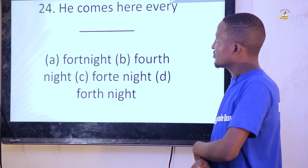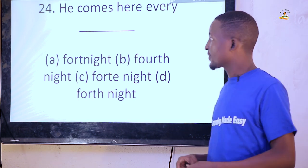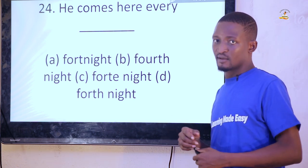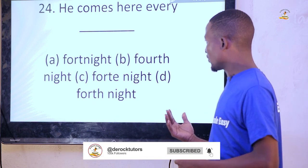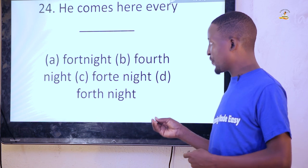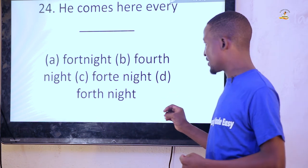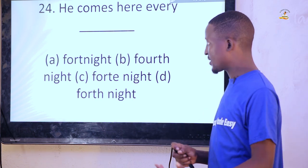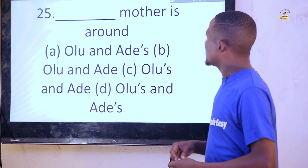This is also a question on correct spelling. 'He comes here every dash — fortnight,' that is every two weeks. The best way to have it written is 'fortnight,' option A: F-O-R-T-N-I-G-H-T. Every fortnight means every two weeks.